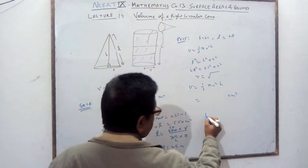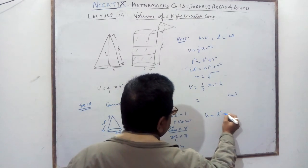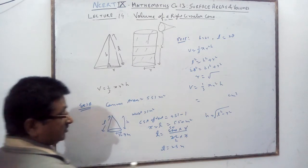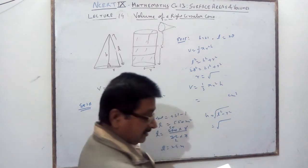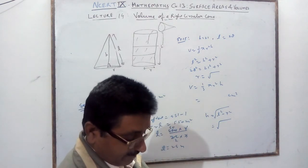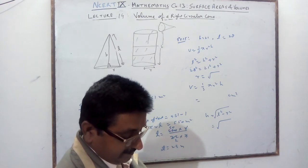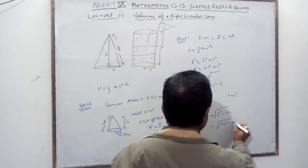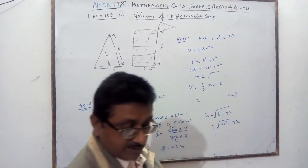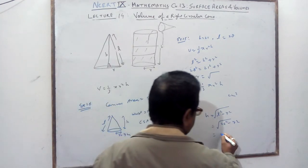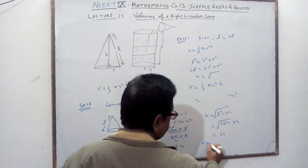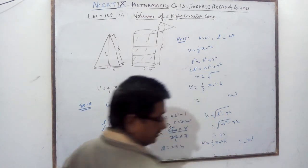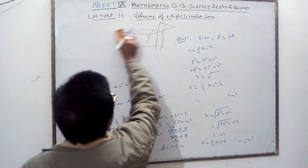Now find h using Pythagoras: h² = l² - r². With l = 25 and r = 7: h² = 25² - 7², calculate and get h = 24. Then find the volume of the tent: volume = (1/3)πr²h. Substitute the values and get your answer in cubic meters.